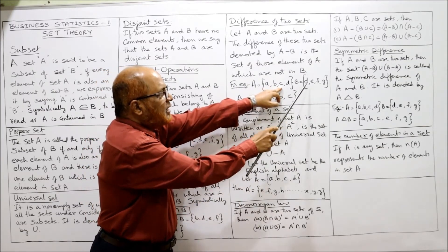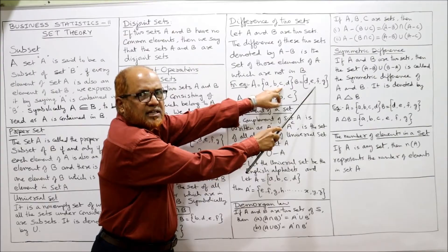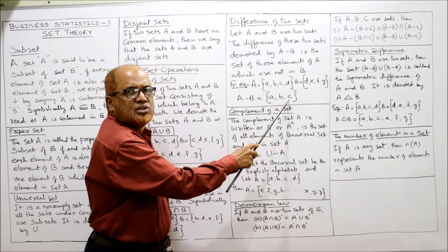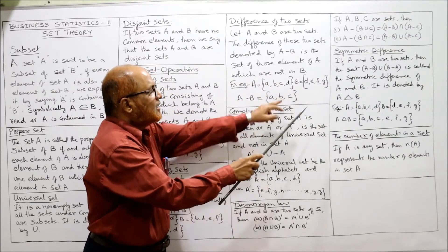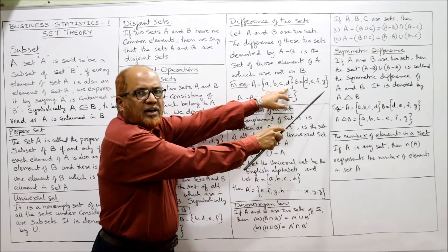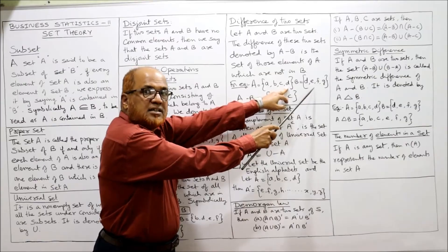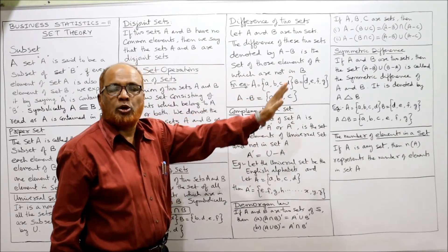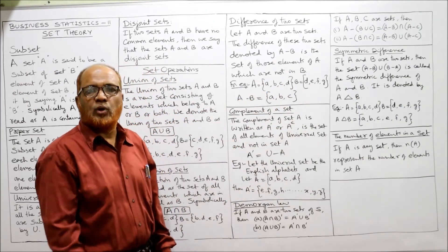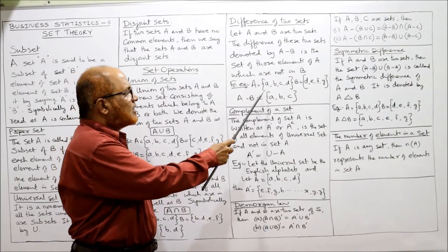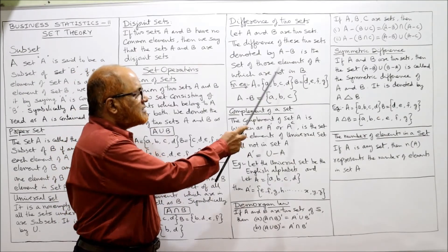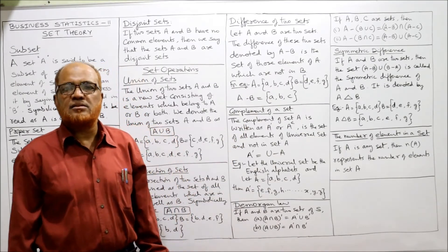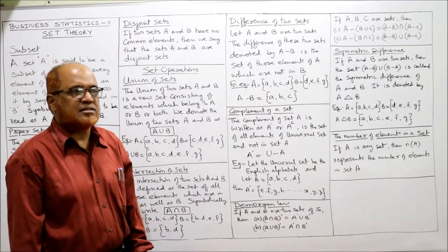D — check if D is in set B. Yes, D is there, so D should not be taken. Therefore, A minus B = {A, B, C}. That is the difference of two sets.